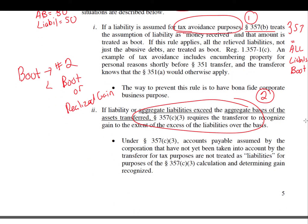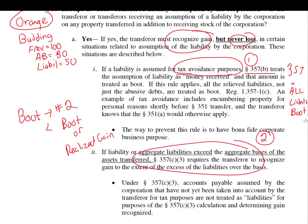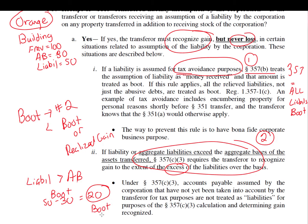The second exception — where we see boot from liability assumption — is when liabilities exceed the basis under Section 357C. In our example, Orange transfers one building with an adjusted basis of $30 and a liability of $50. The liability is greater than the adjusted basis. If aggregate liabilities exceed the aggregate basis, you have boot. The boot is the excess — $50 minus $30 equals $20. So $20 is considered boot, and we apply that $20 to the lesser-of rule.